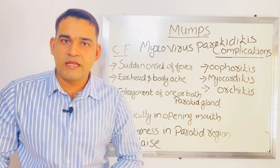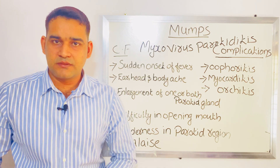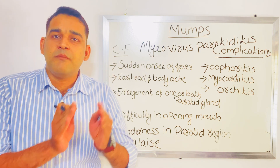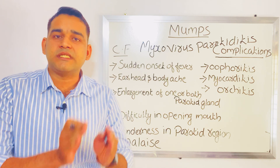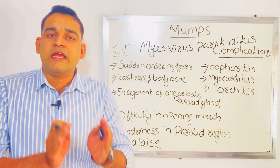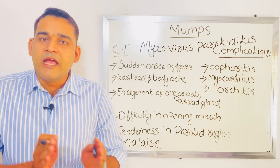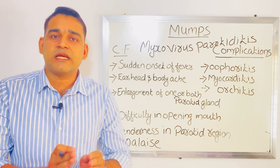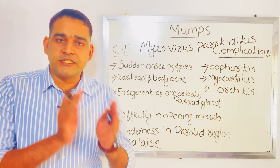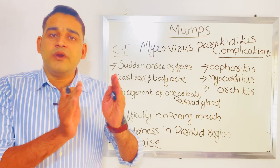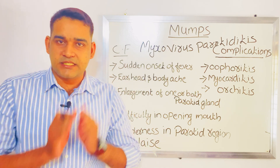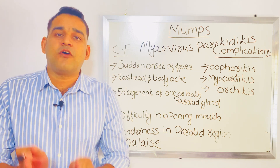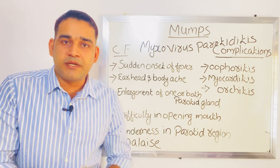Next, the infective material of mumps is the salivary secretion of the infected person. Regarding the period of infectivity or communicability, it is four to six days before the onset of the clinical features.